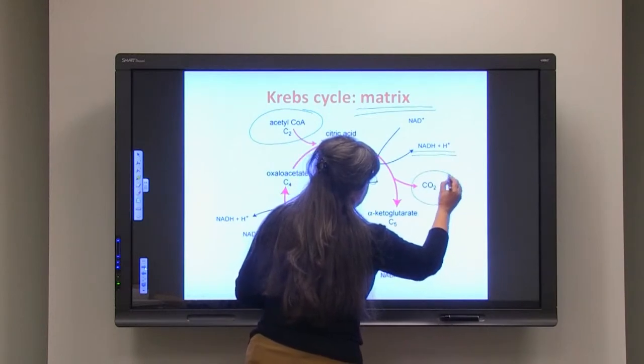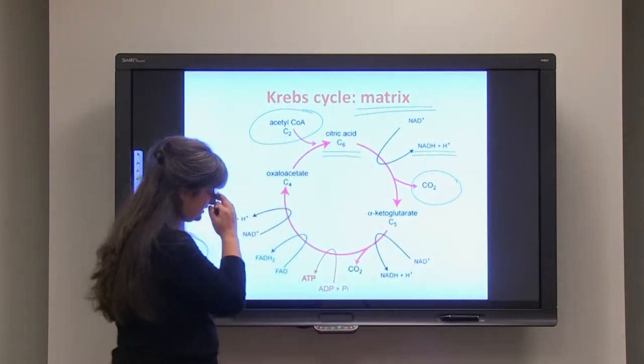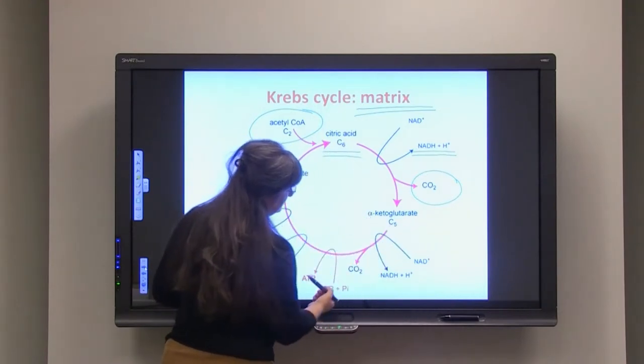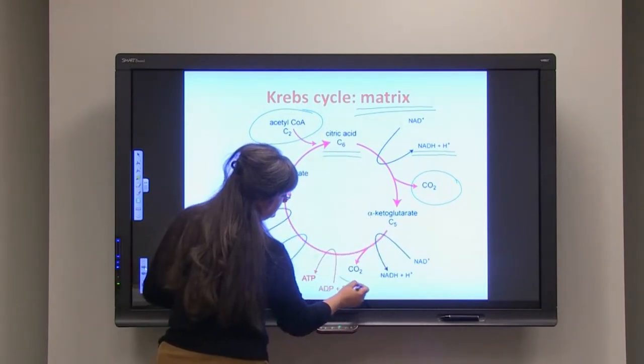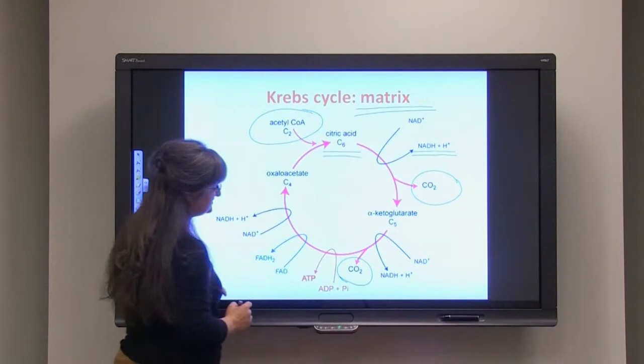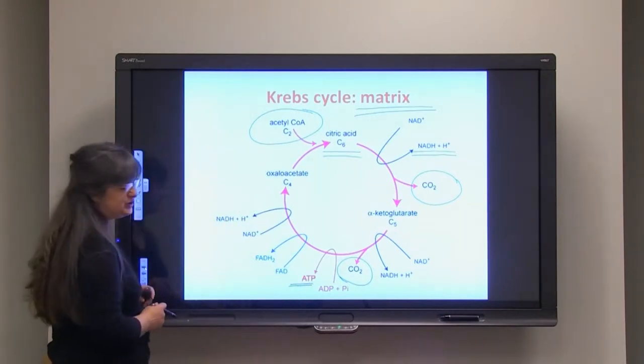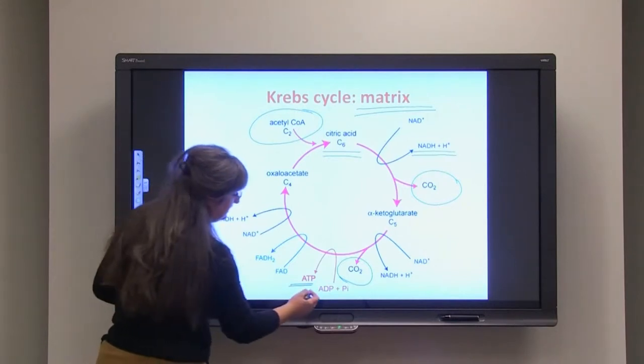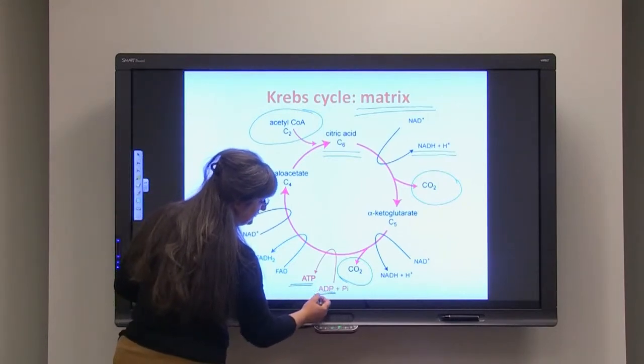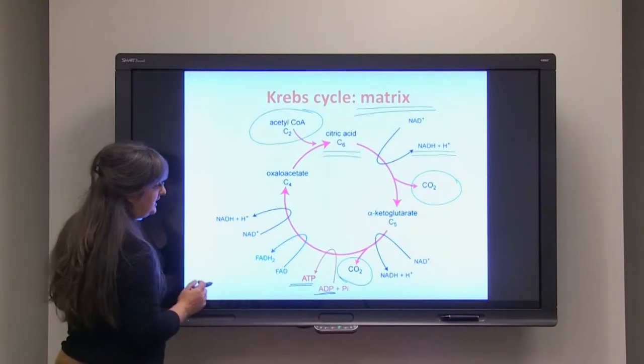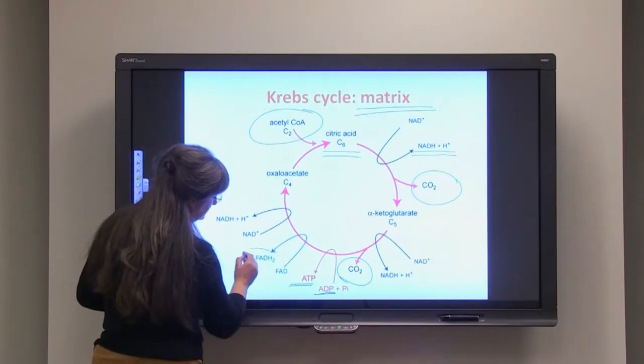One carbon dioxide is lost in the process here between formation of citric acid and alpha-ketoglutarate. The other carbon dioxide is used. Only one ATP molecule is produced from the ADP adding phosphate group.